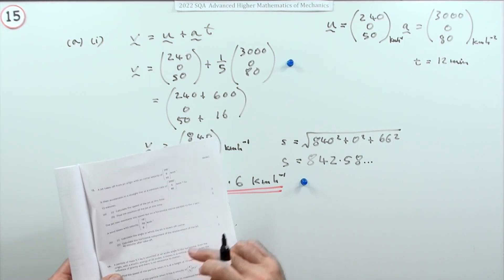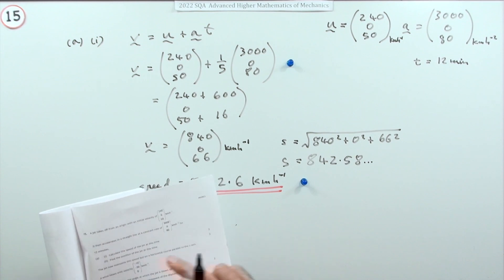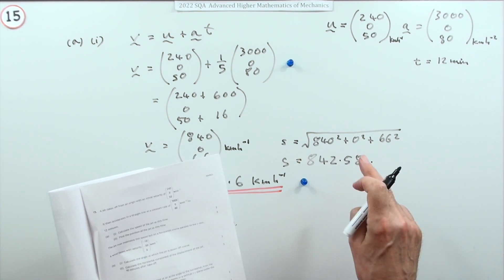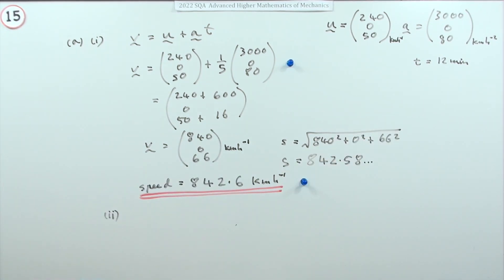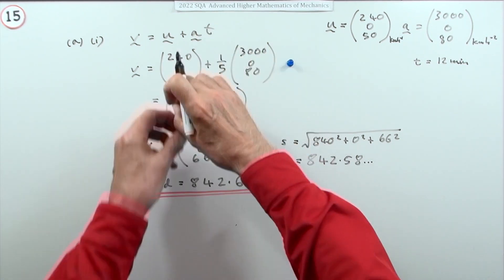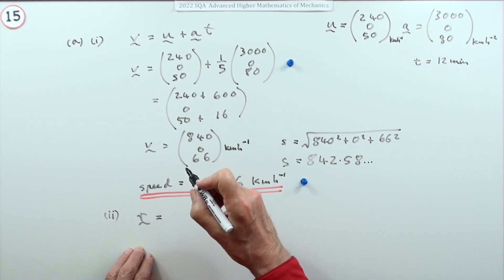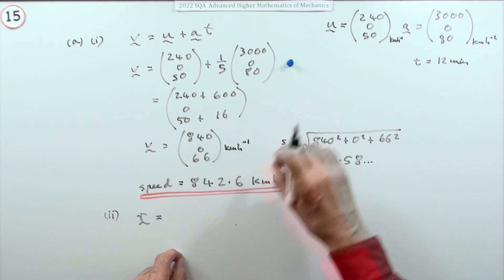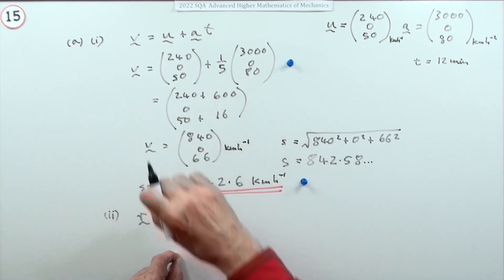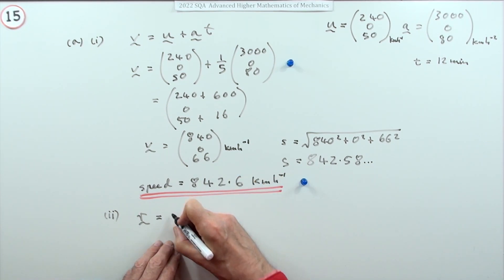For part two, for another two marks, find the position of the jet at this time. The position means its displacement - how far along, how far back, and how far up. I haven't left myself much room. r will be just like s equals ut plus half at squared, only using r in three dimensions. That's the radial vector that goes from the origin to the point.